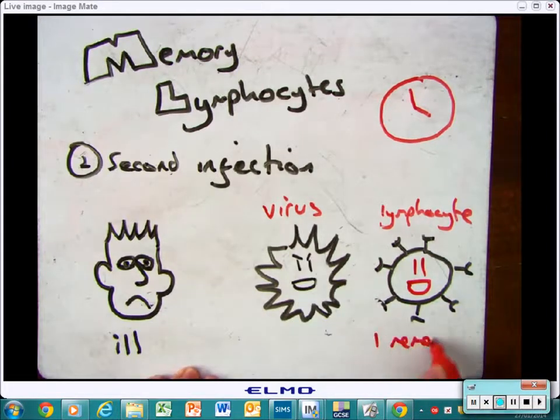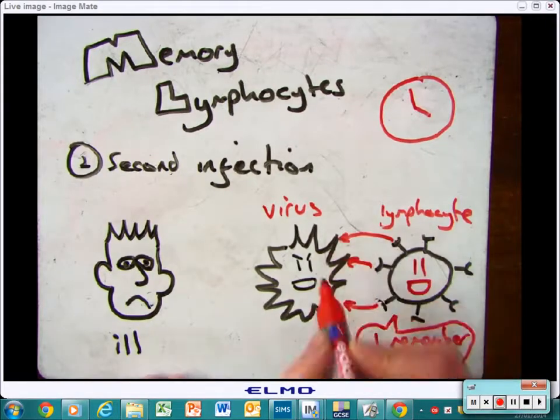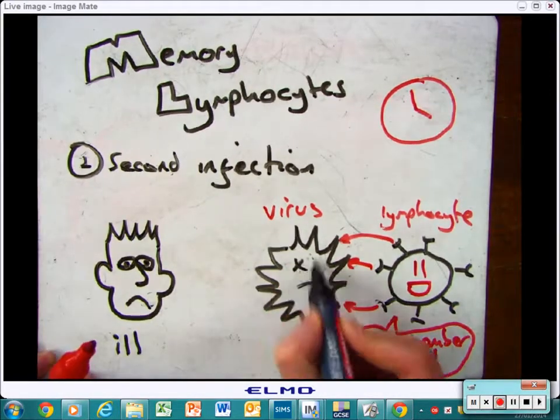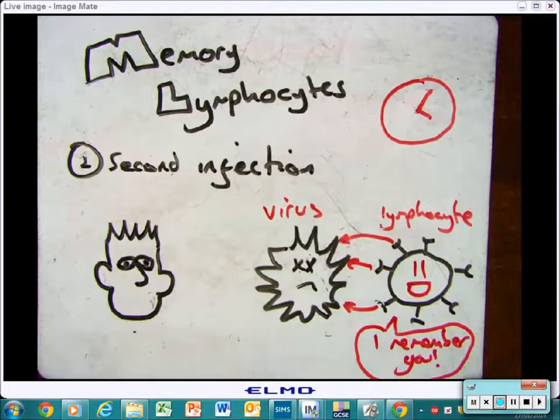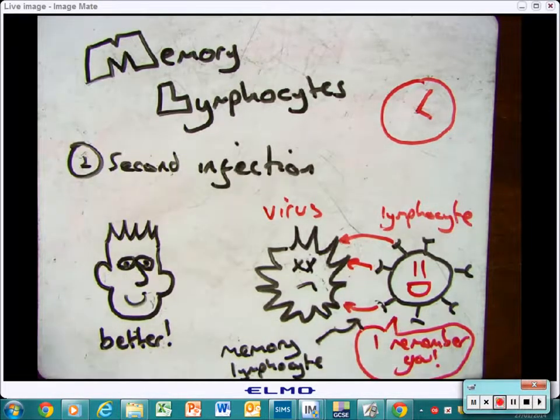On the secondary infection, those memory cells produce the antibody straight away. It remembers them and can attack the virus straight away, which makes you feel a lot better a lot quicker. That's what we call a memory lymphocyte.